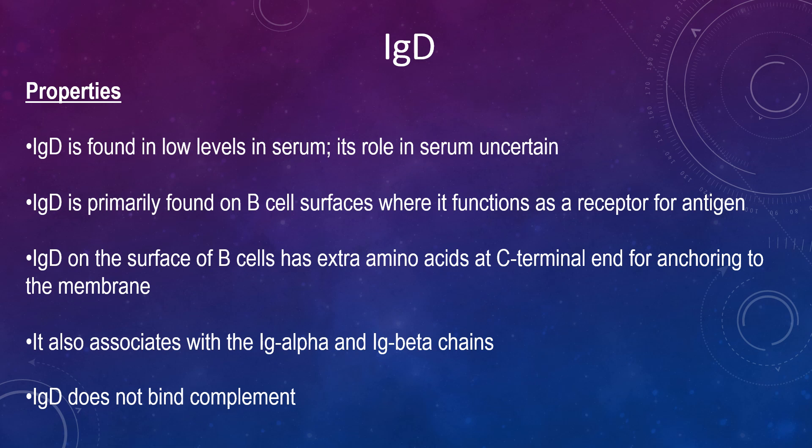IgD exists only as a monomer. It is found in low levels in serum and its role is uncertain. It is primarily found on B-cell surfaces where it functions as a receptor for antigens. It has extra amino acids at the C-terminal end for anchoring to the membrane. It also associates with IgA and IgB chains and does not bind complement.